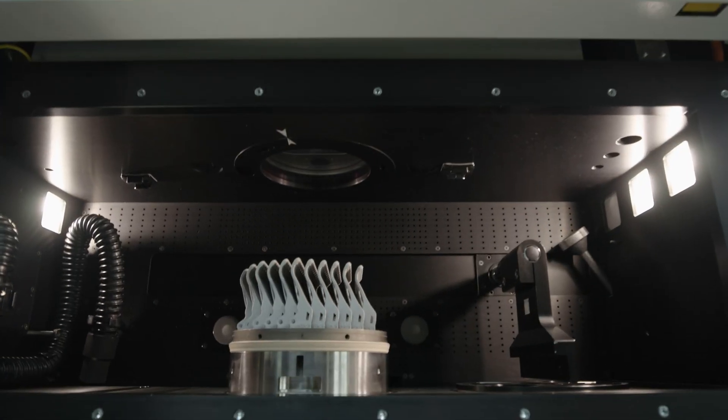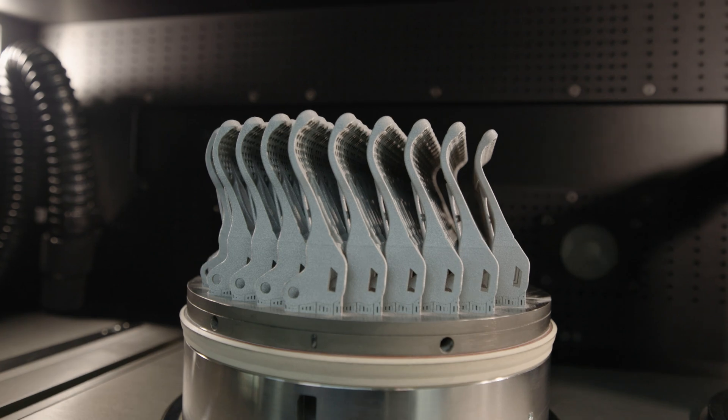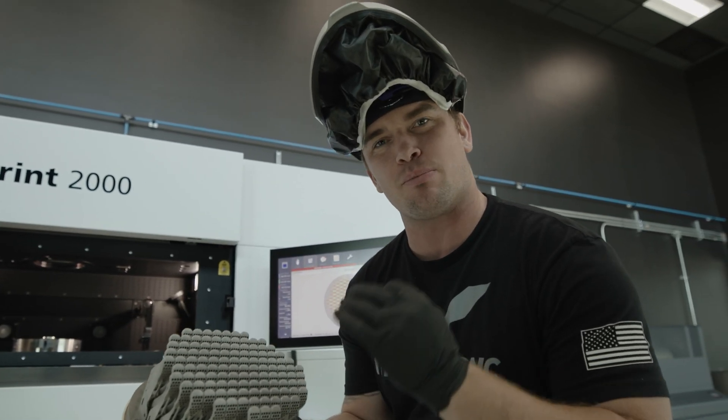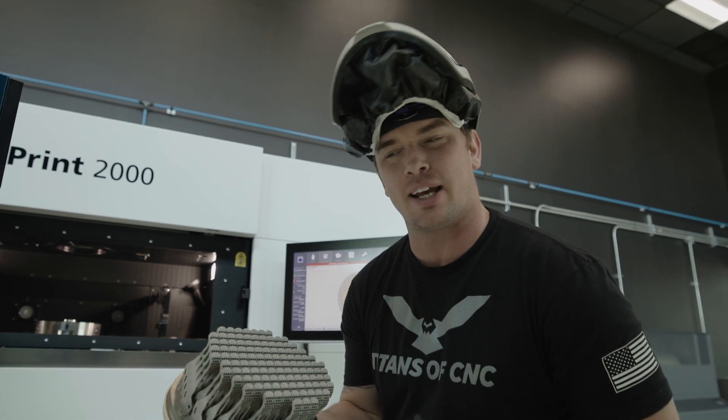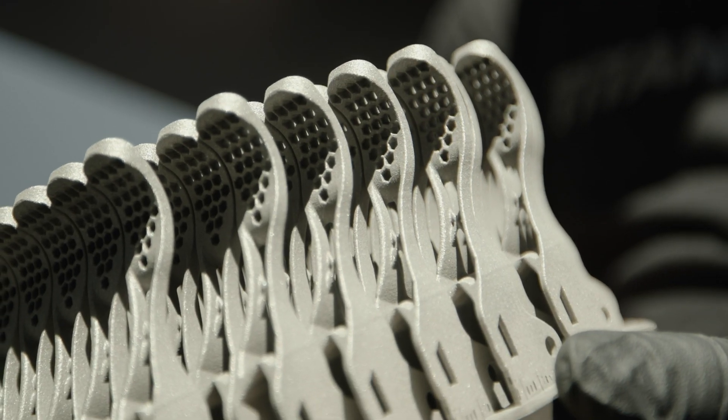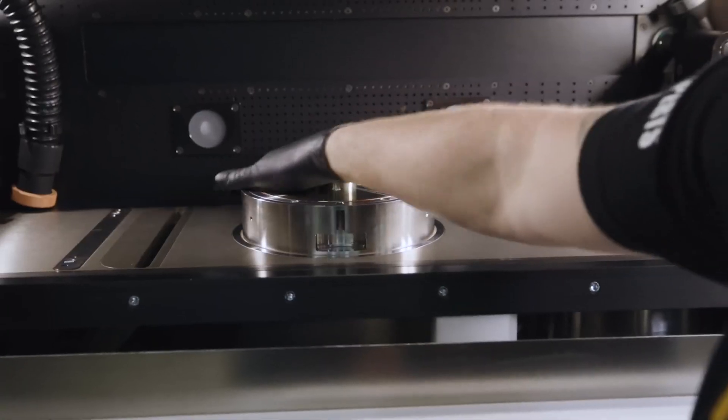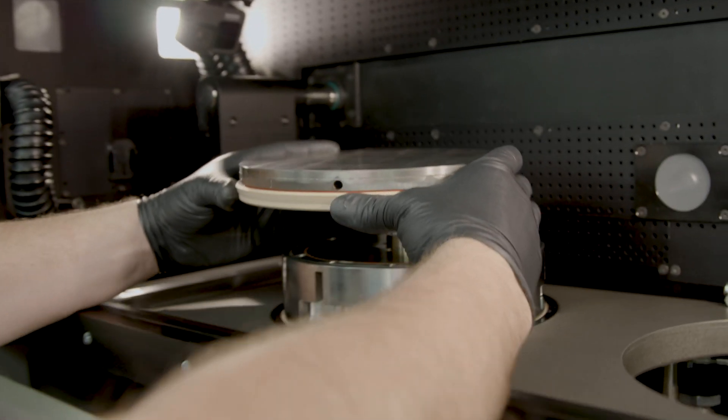Look at all those parts. Those look good. We were able to print 112 titanium brake levers for high-end mountain bikes. If you look at our build plate here, each one of these is a part in and of itself. This is an extremely productive way to manufacture these brake levers.